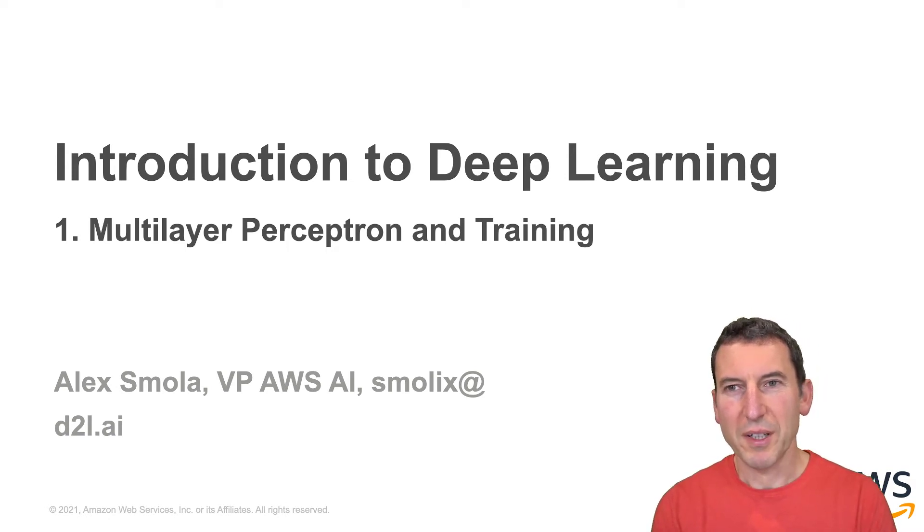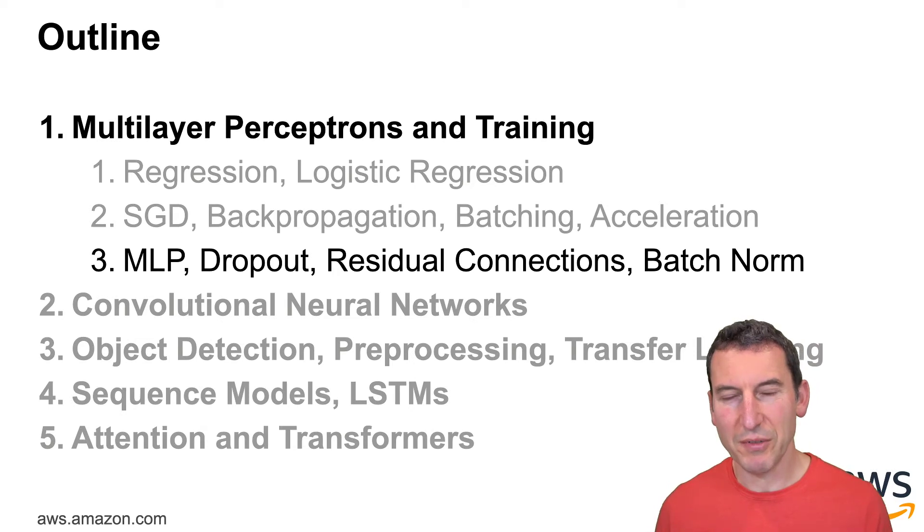Welcome to the third part of the introductory chapter into deep learning. After discussing how to set up regression and classification and how to solve the optimization problem, we're now going to look at multilayer perceptrons, dropout, residual connections and so on.